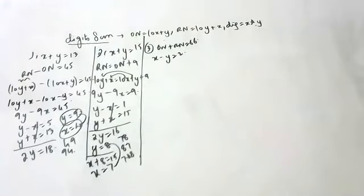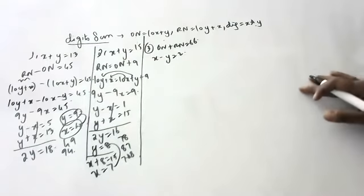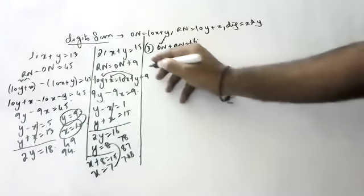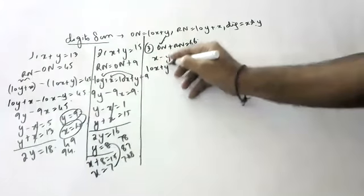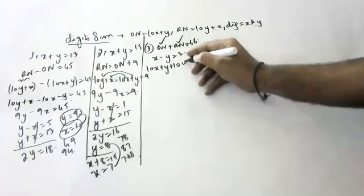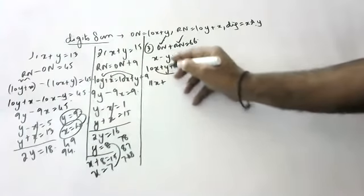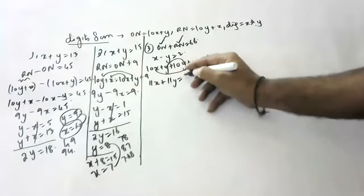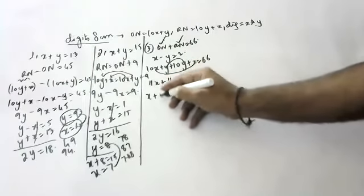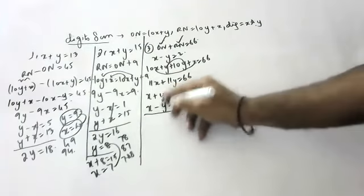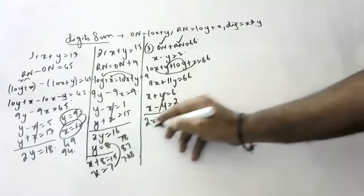10X plus Y plus 10Y plus X is equal to 66. Simplifying: 11X plus 11Y is equal to 66, so X plus Y is equal to 6. Also X minus Y is equal to 2. Adding, X cancels out: 2X is equal to 8, so X is equal to 4.